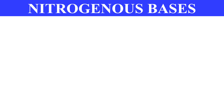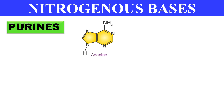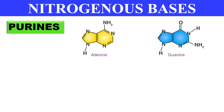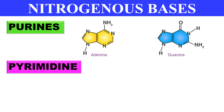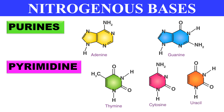Now the next component is nitrogenous bases. There are purines and pyrimidines. Purines consist of adenine and guanine, while pyrimidines consist of thymine, cytosine, and uracil. These are the nitrogenous bases present in DNA, except uracil, which is present only in RNA.